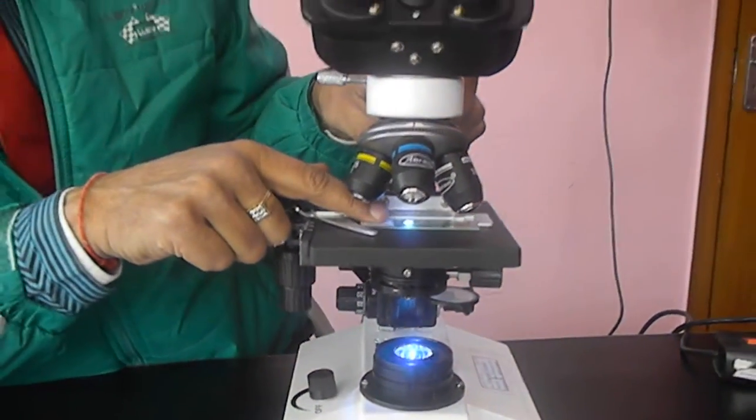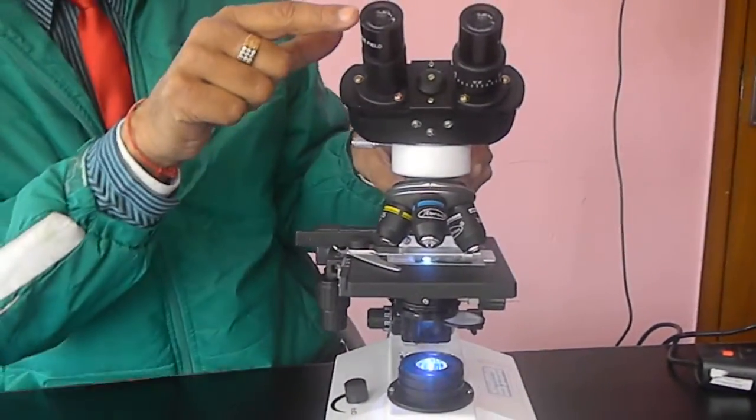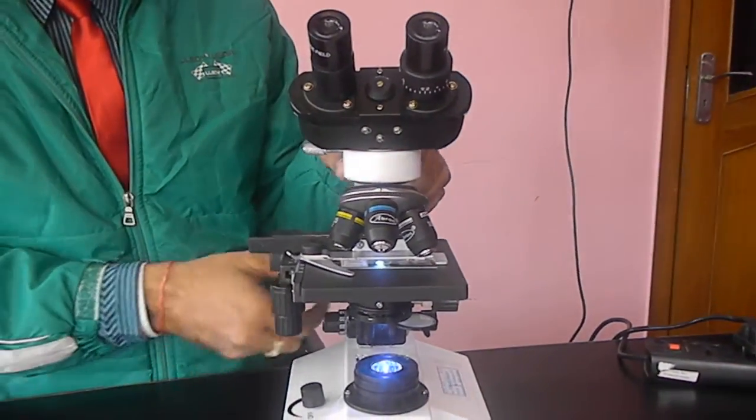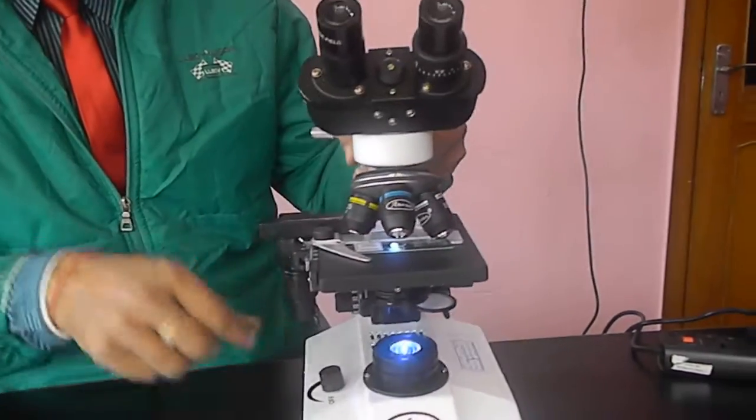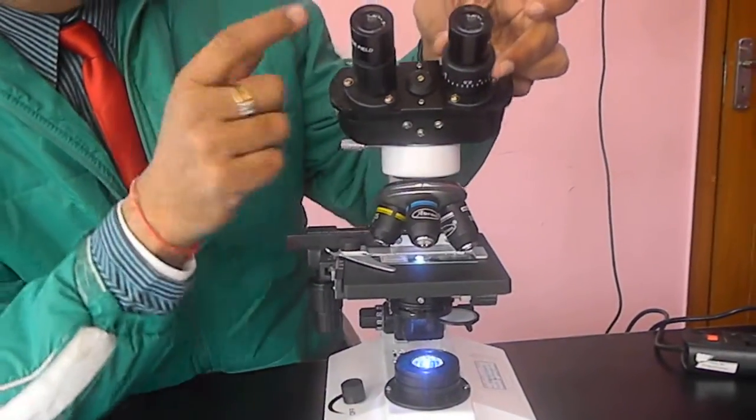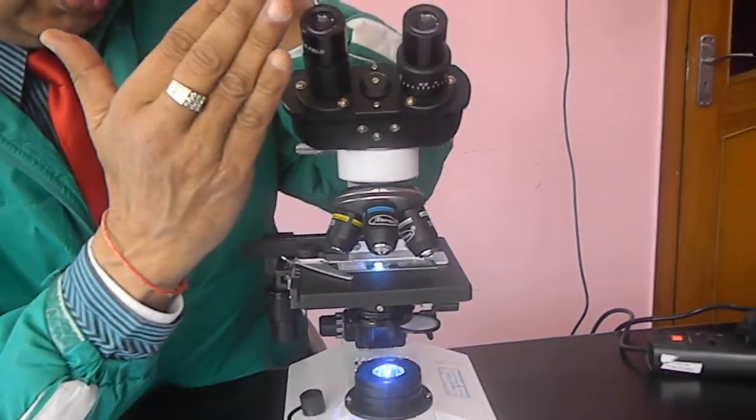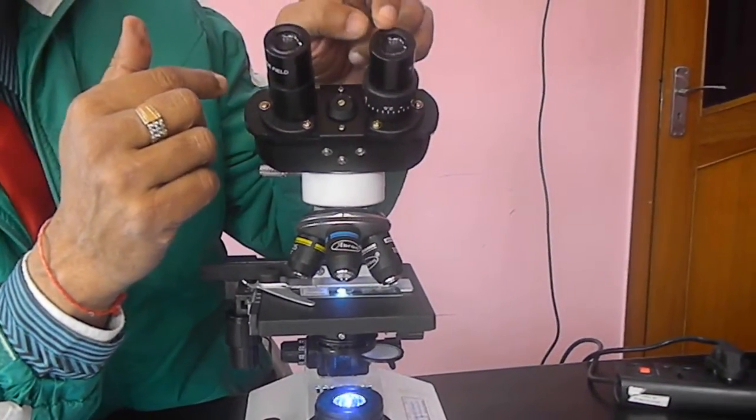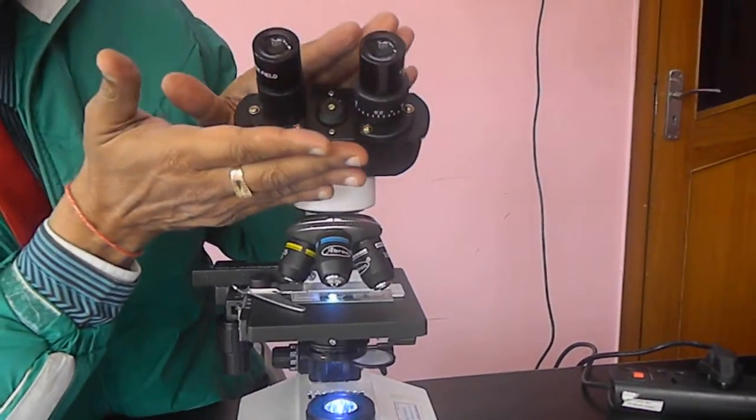Then focus the 10x eyepiece with the left hand. This eyepiece is fixed. Focus this using the focusing knob, and then closing your left eye with your hand, you can focus the other with this. Now both eyes will be adjusted to your focus. This is the first step.